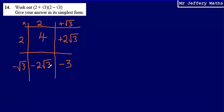So I've multiplied all the terms together, and what I should now spot is that I've got positive 2√3 and negative 2√3, which are going to cancel each other out.